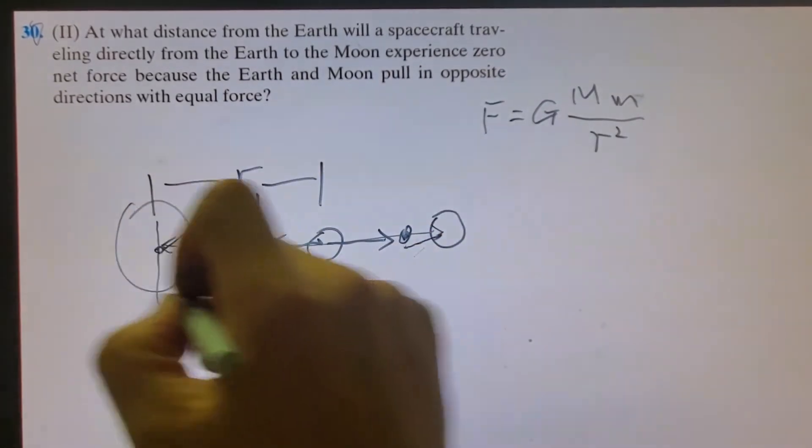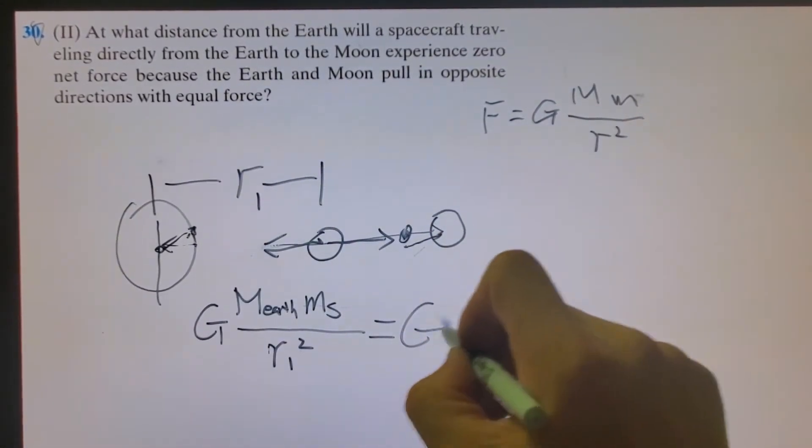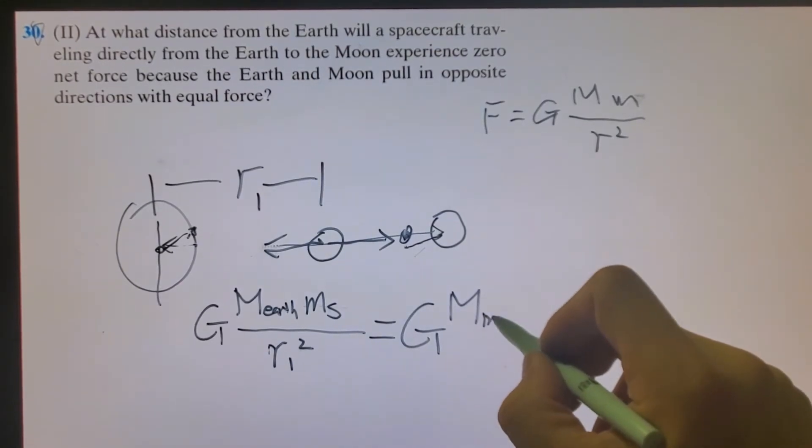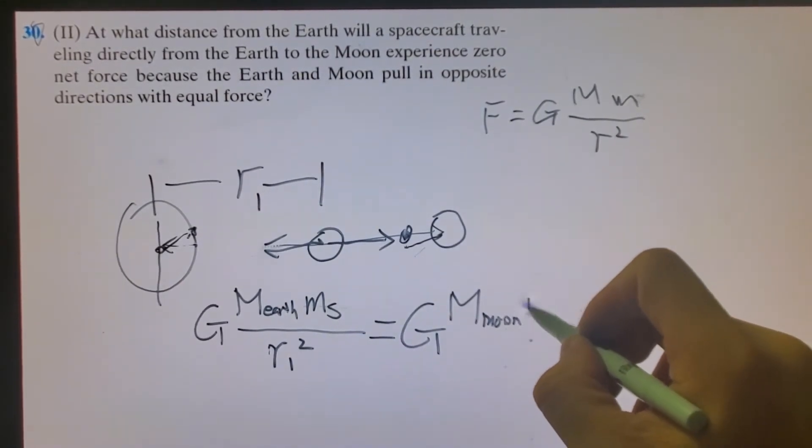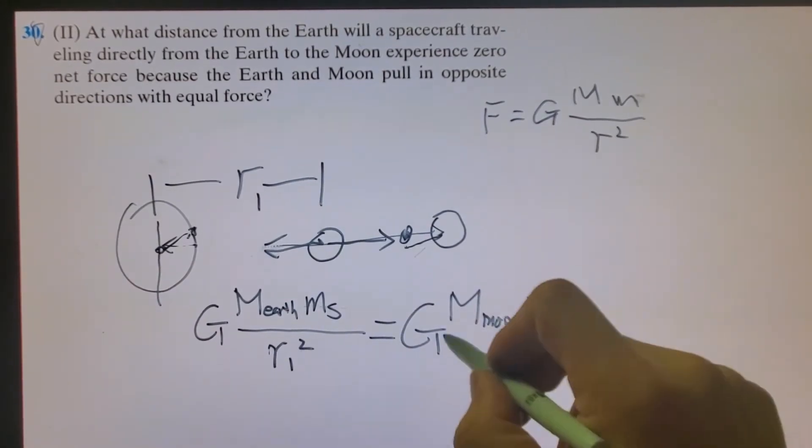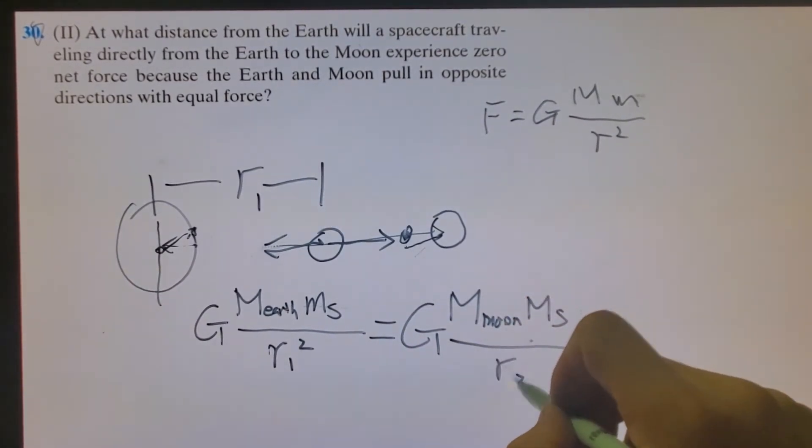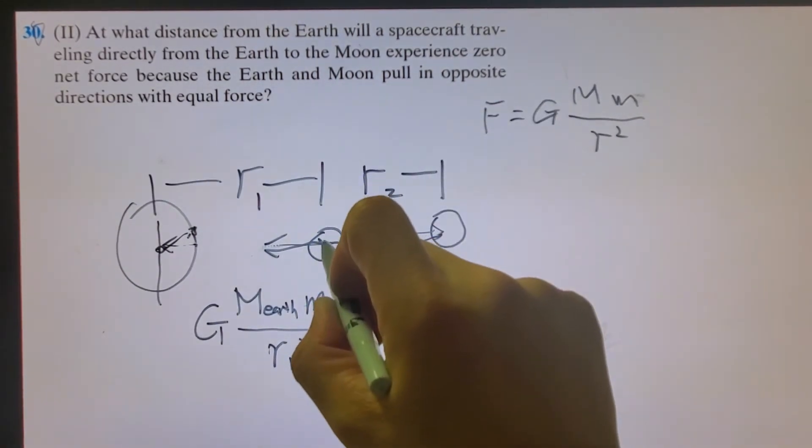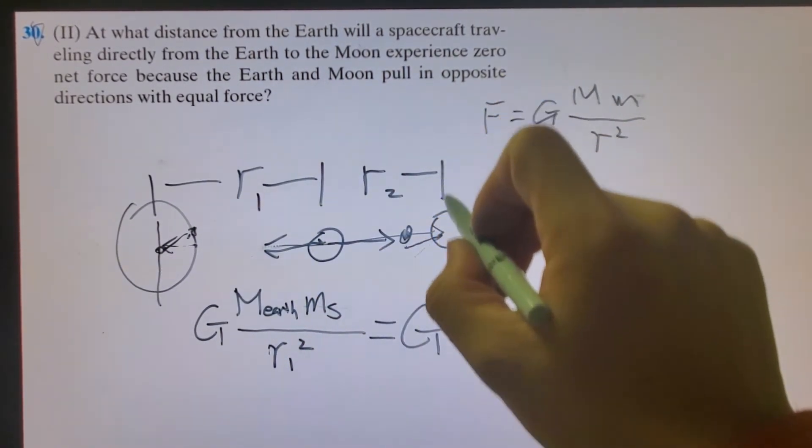When this force is equal to the other force, G times M of the moon, times mass of the spaceship, divided by R2. R2 is the distance between the spacecraft and the moon.